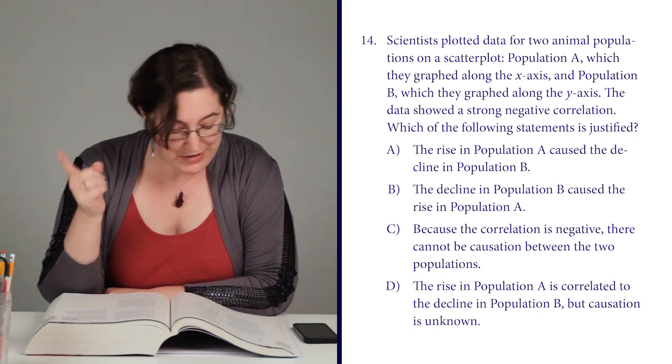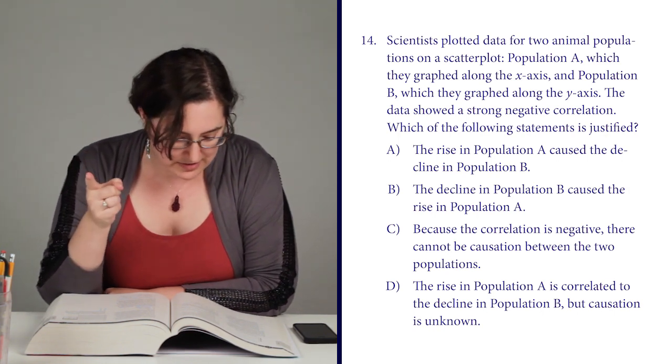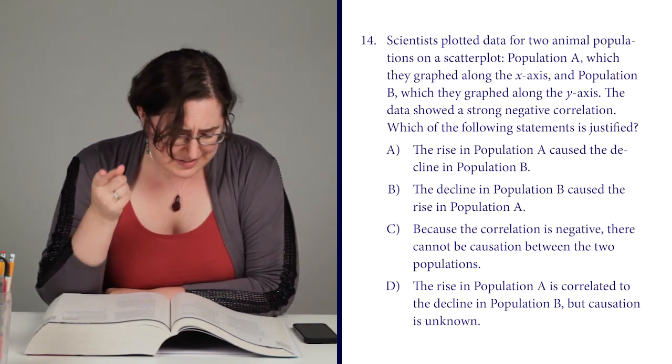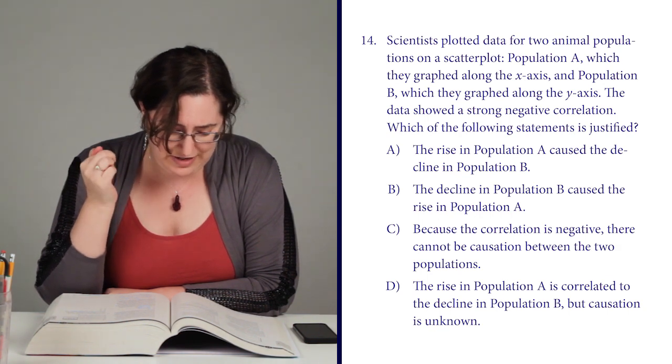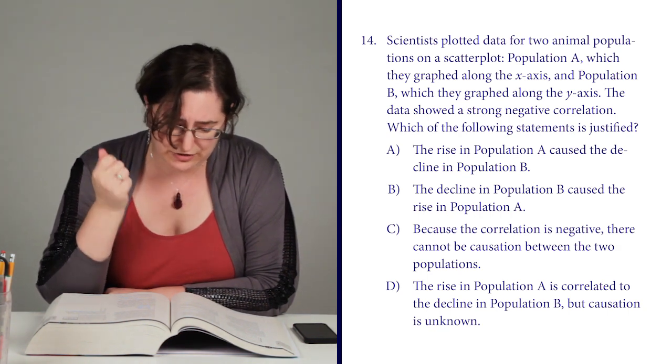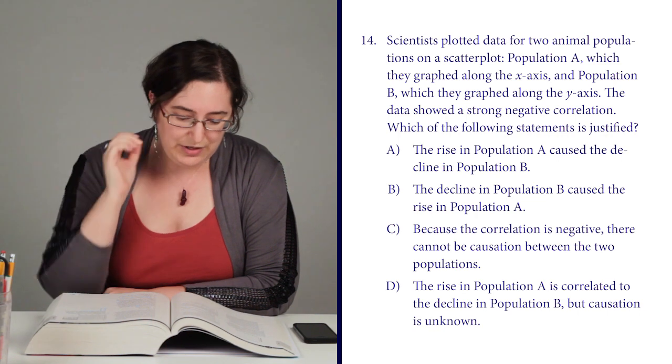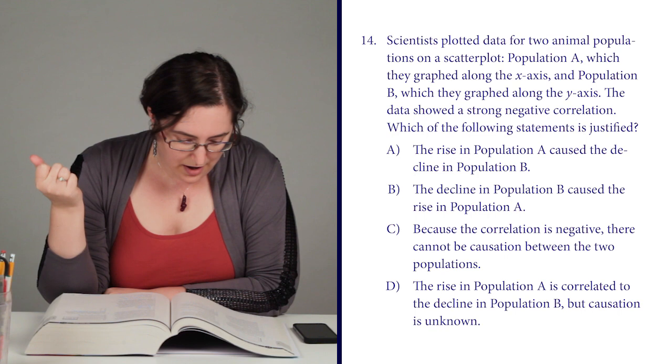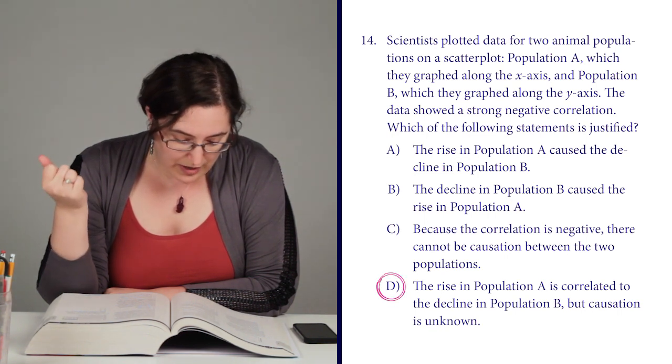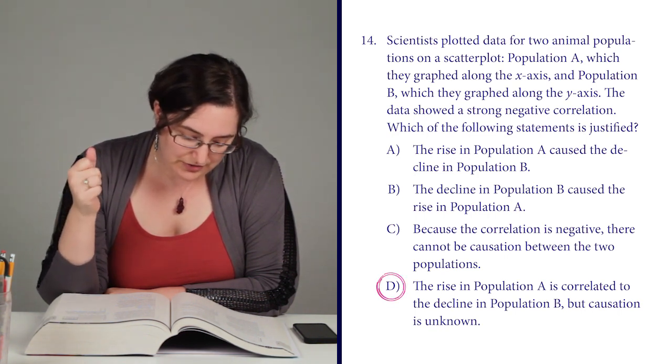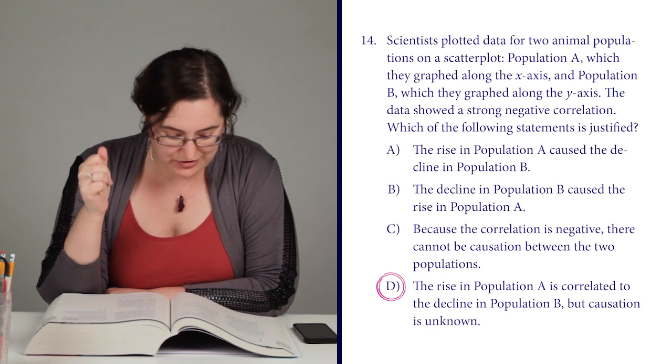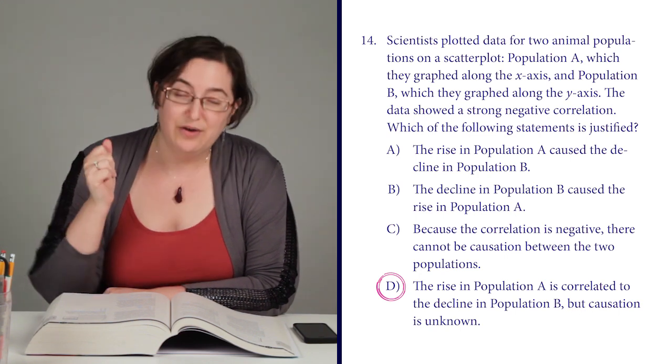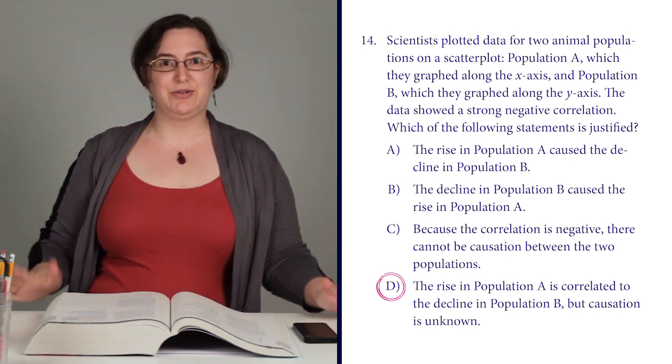Which is happening in both A and B, and I am not falling for that nonsense. C says because the correlation is negative there can't be causation, which isn't necessarily true. There just don't know for sure, so we can't make statements about it. So C is just as bad as A and B. And D, the rise in population A is correlated to the decline in population B, but causation is unknown, which is exactly what I was looking for. Thank you, answer choice D.